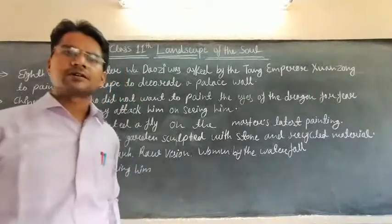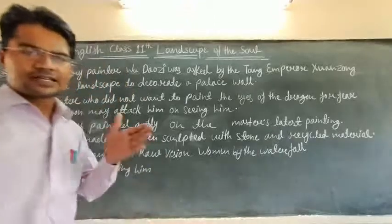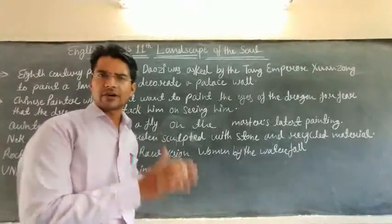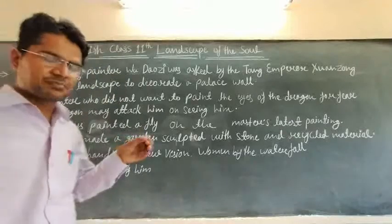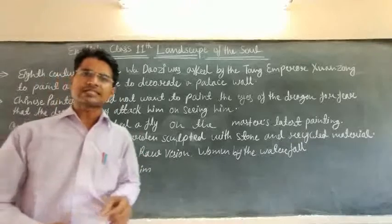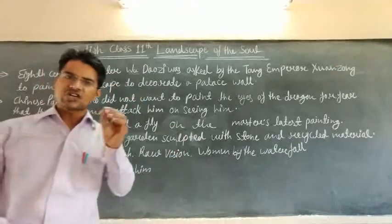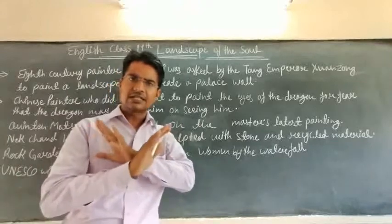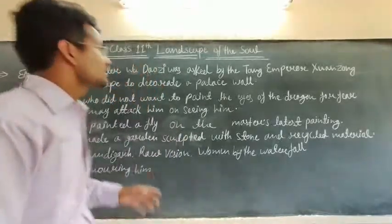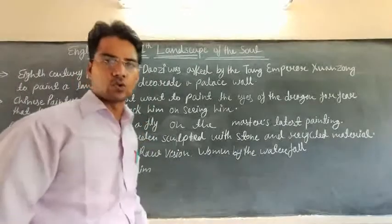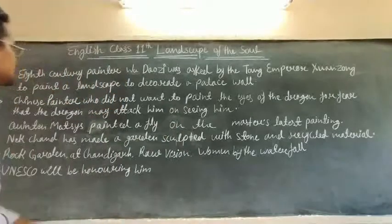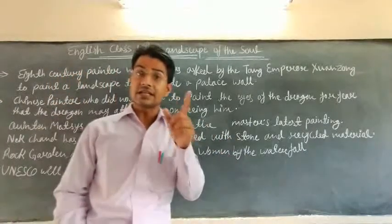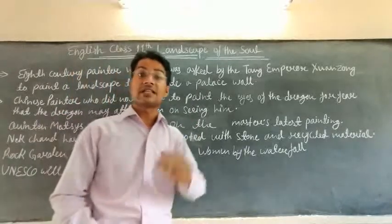Hello, good morning students, dear colleagues and friends. We will discuss a great chapter because this chapter indicates what is spirituality, what is reality, and what is physical. This chapter is based upon landscape and is described between two nations — Chinese art and European art. The chapter name is 'Landscape of the Soul', Class 11th English, Chapter 4. Our discussion is totally about art, the practice of art, and the greatness of art.